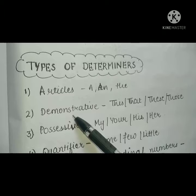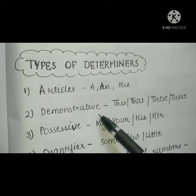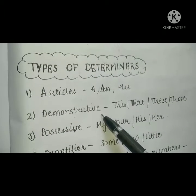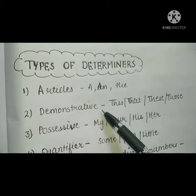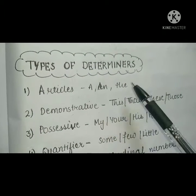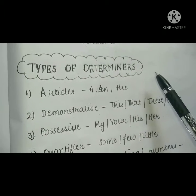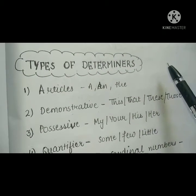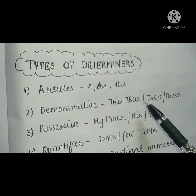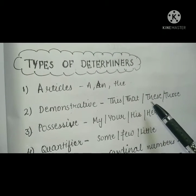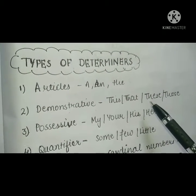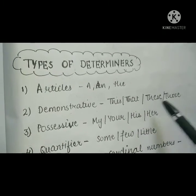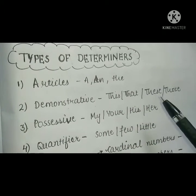The next one is demonstrative. What does demonstrative mean? Demonstrate — tell that. This is mine. This book is mine. This pen is mine. That house is mine. So the words used in demonstrative are: this, that, these, those.